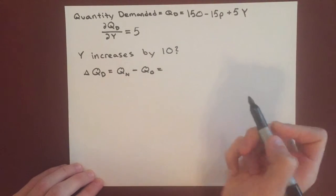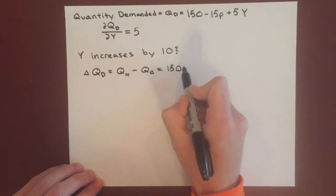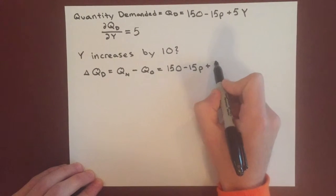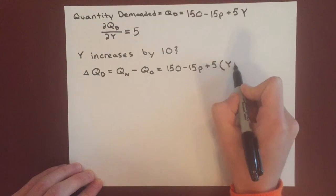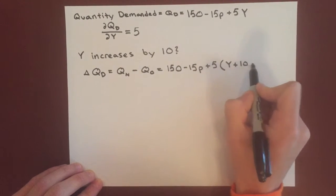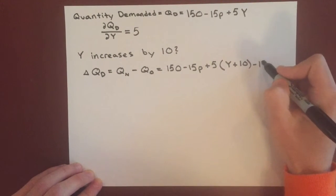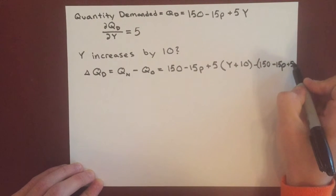And so we have quantity new, we'll say is after the increase. So 150 minus 15p plus 5, and then we'll say the original Y plus 10, and then minus 150 minus 15p plus 5Y.